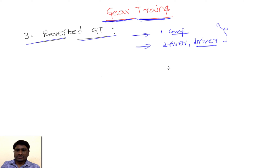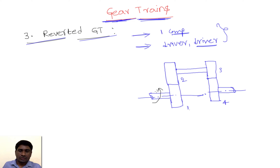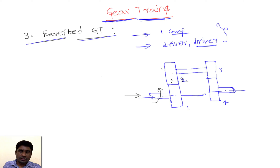This is what a simple reverted gear train looks like. This is the driver gear. For example, if it is rotating in the anti-clockwise direction when viewed from this side, then gear 2, which is engaged with it, will rotate in the clockwise direction.